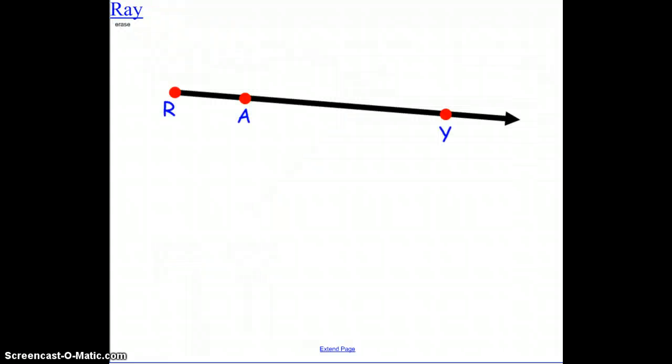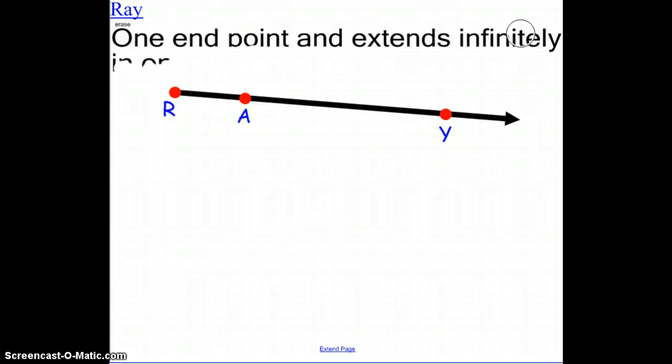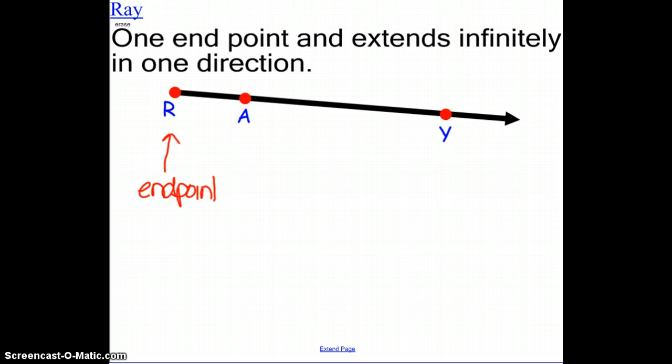Another term that we want to use our undefined terms to define would be a ray. A ray has one endpoint and extends infinitely in one direction. So the endpoint would be R, and it extends infinitely to the right in the direction of Y, yet never stopping at Y, which is why there is an arrow. That means that it extends infinitely.